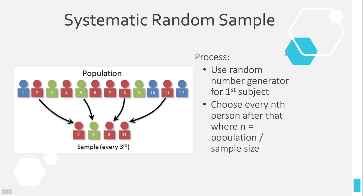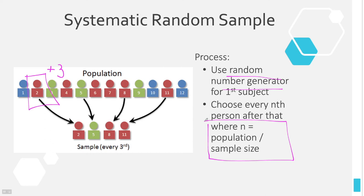The last method for random sampling is systematic sampling, and even systematic uses a random number generator at the very beginning. The first subject is chosen using a random number generator, and then you add a specific interval. That number is determined by taking the population size and dividing it by the sample size. For instance, if you had a city with a population of 100,000 and a sample size of 10, you'd divide 100,000 by 10 and get 10,000 — so you'd go to every 10,000th person.